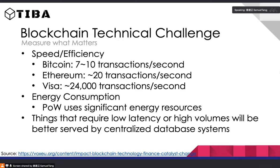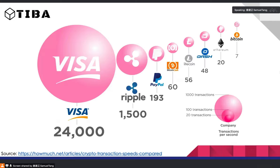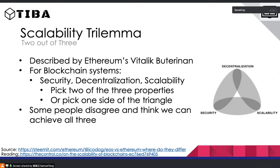Some challenges blockchain faces: speed and efficiency. Bitcoin can do about seven to eight transactions per second, Ethereum around 20, but Visa can do close to 24,000 transactions per second — there's really no comparison. Another challenge is energy consumption, especially for Bitcoin using proof of work. The conclusion is that for high-volume or low-latency systems, it's still better to be more centralized than completely decentralized.